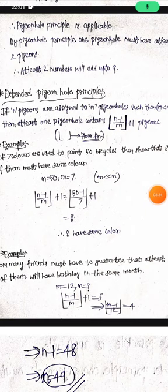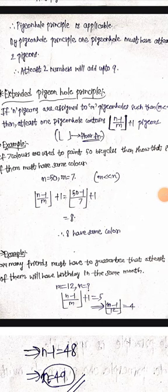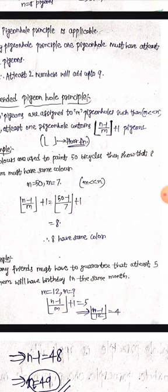The floor function means generally we should take the integer less than that decimal value. For example, if there is 3.1, the floor function is 3. If there is 4.2, then it is 4. So at least 1 pigeon hole contains the floor function of n minus 1 by m, plus 1 pigeon.